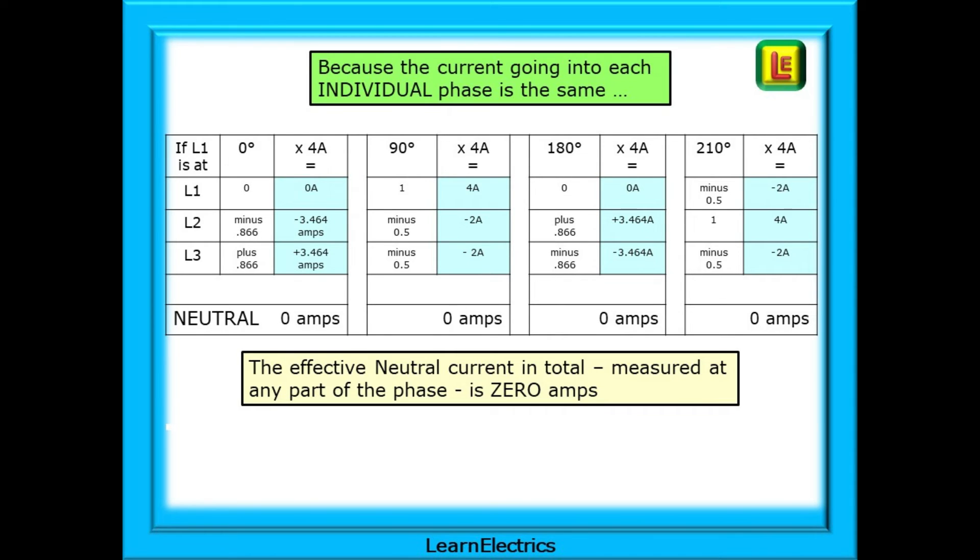At 0 degrees, there is current flowing in L2 and L3. But they are equal and opposite, so cancel each other out. Net result, 0 amps. At 90 degrees, all three phases have an effect, but still add up to 0.